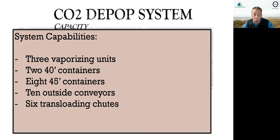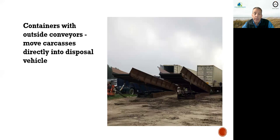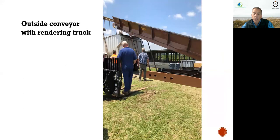Our system capabilities: we have three vaporizing units, twenty 40-foot containers that are depop chambers, eight 45-foot containers that are depop chambers, ten outside conveyors, and six transloading chutes. Here you can see these set up initially for a demonstration — the container units, the outside conveyor, and how it conveys carcasses into a disposal vehicle. In this picture we were on a farm actually doing a depop of wean pigs; once they come out of the container they go to this outside conveyor, which conveys them right into a rendering vehicle.